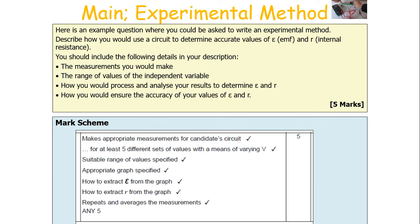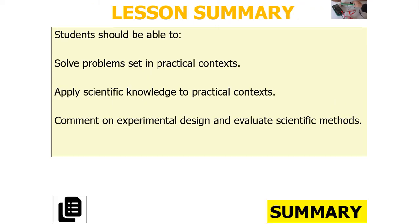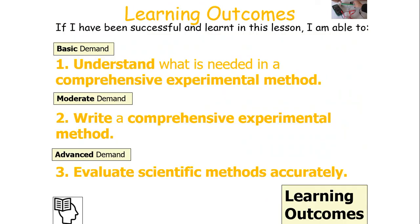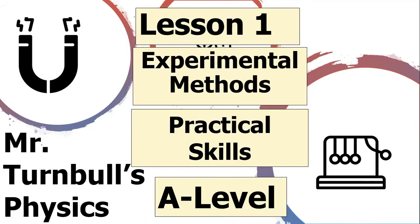If we've been successful, we should have been able to solve problems set in practical contexts, apply scientific knowledge to practical contexts, and comment on experimental design and evaluate scientific methods. You understand what is needed in a comprehensive experimental method, you can write a comprehensive experimental method, and you can evaluate whether a scientific method is comprehensive and accurate. I hope you've enjoyed today's lesson looking at practical skills in A-level physics and focusing on how to write a valid and comprehensive experimental method. Have a lovely day.